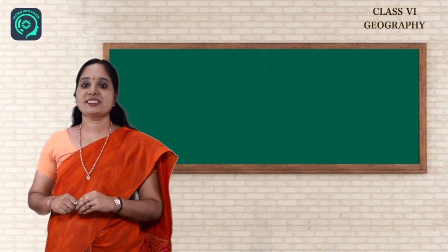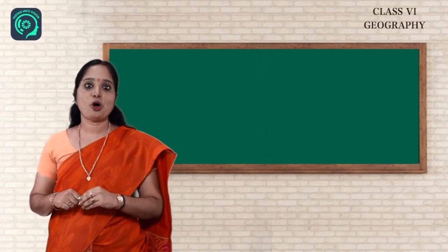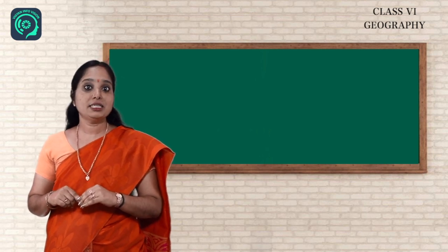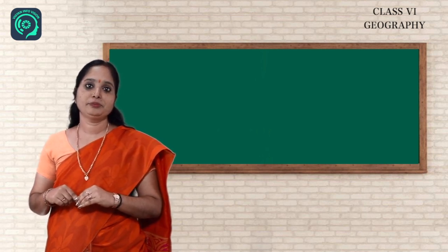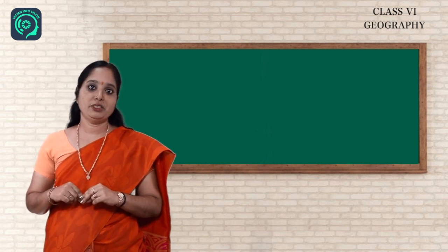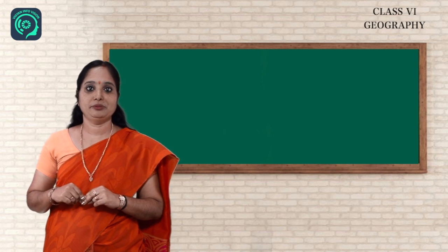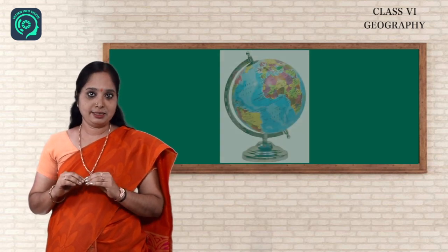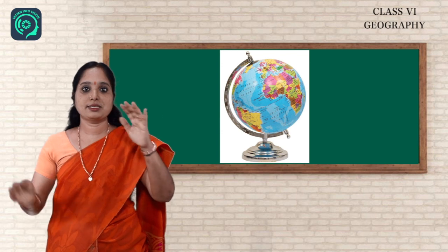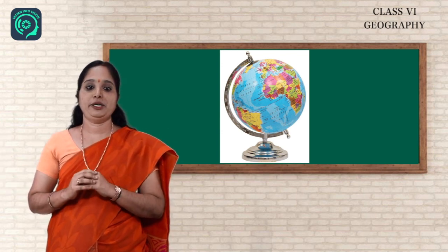Hello children, welcome to the social science class. Today we are going to learn a new topic in geography. Do you remember studying about our earth in the previous chapter? The shape of the earth is geoid. The earth is slightly flattened at the poles and bulged in the center, hence its shape is called geoid.